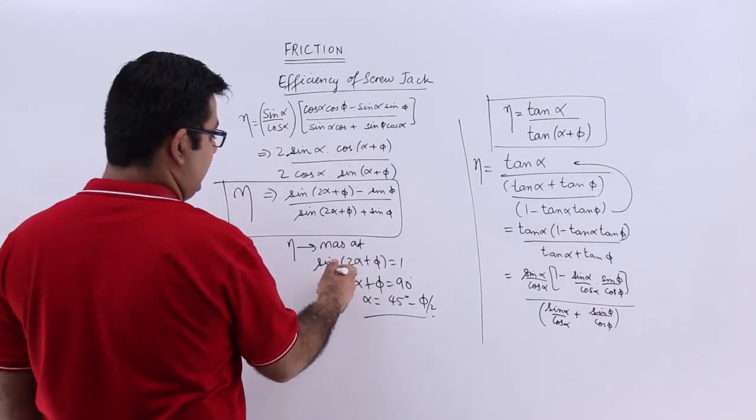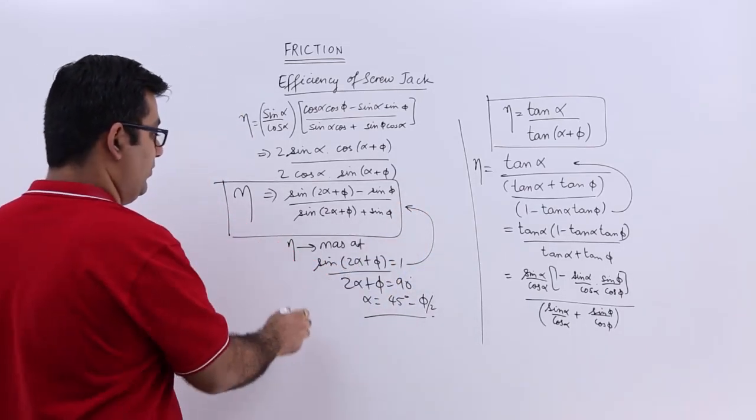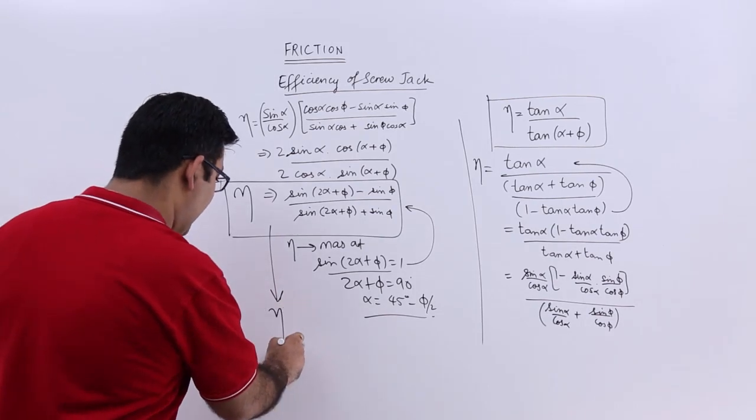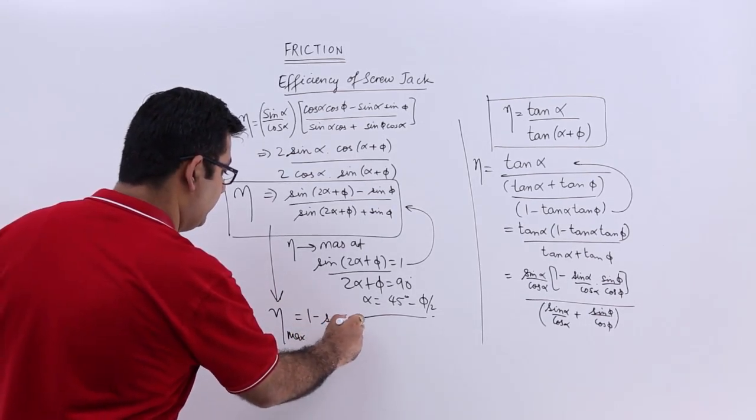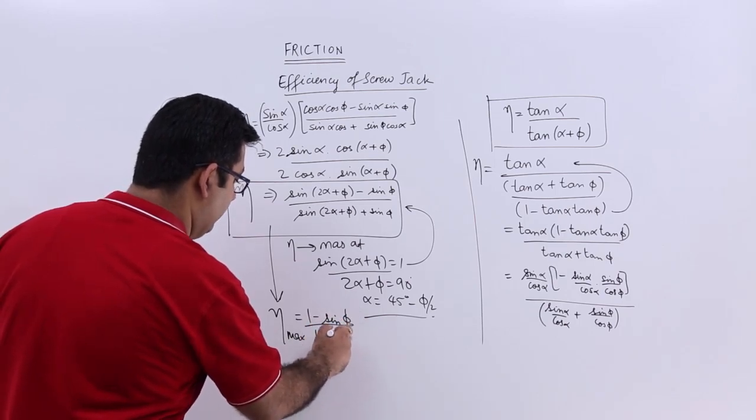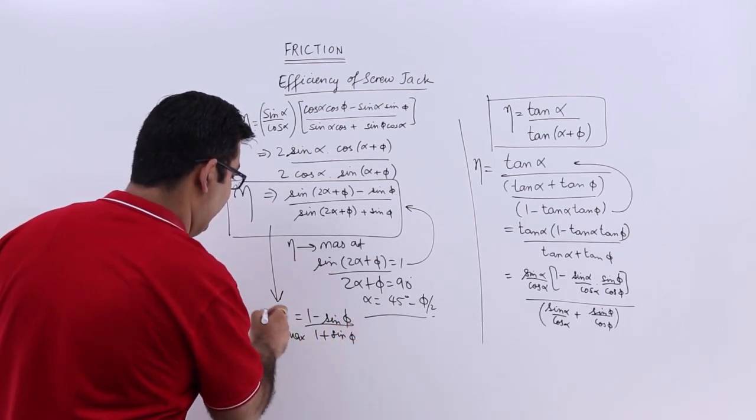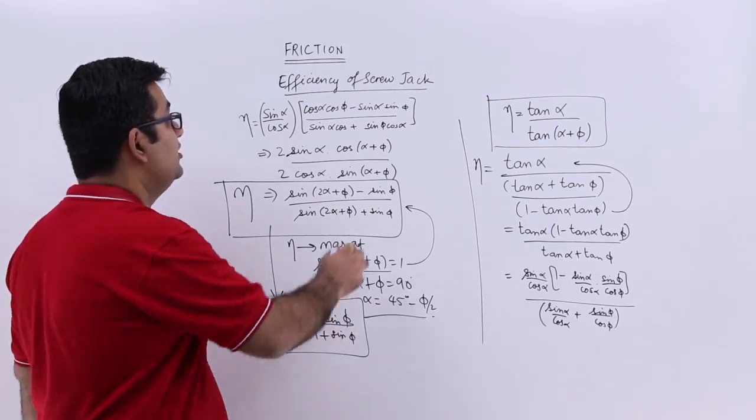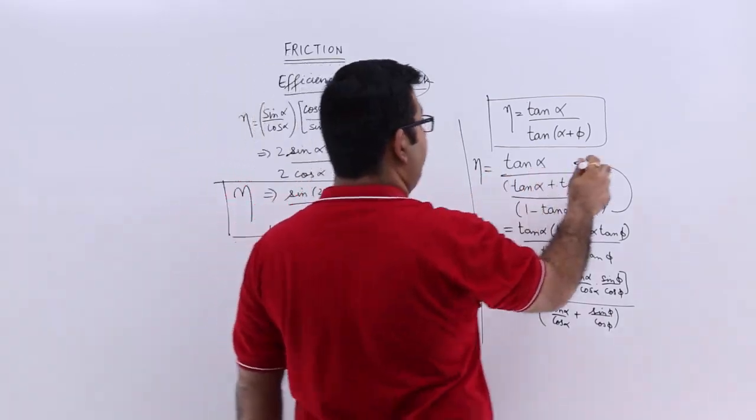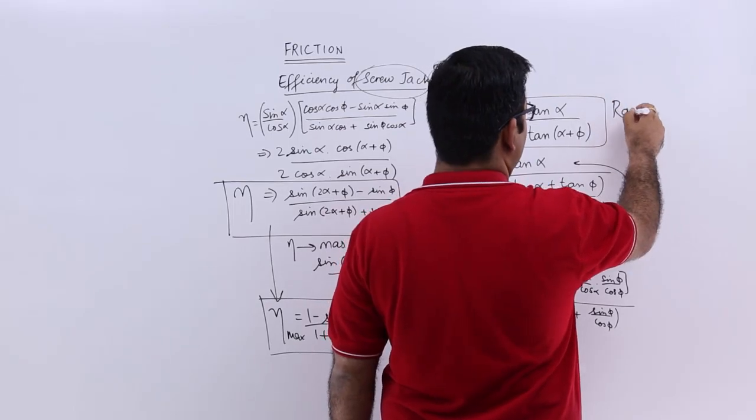When you put this equal to 1, we get eta max 1 minus sin phi upon 1 plus sin phi. So this is the value of maximum efficiency of a screw jack when we are raising the load.